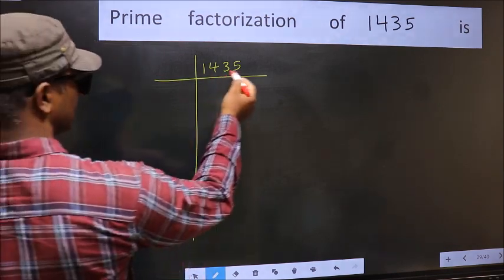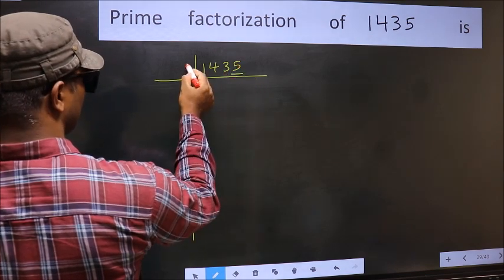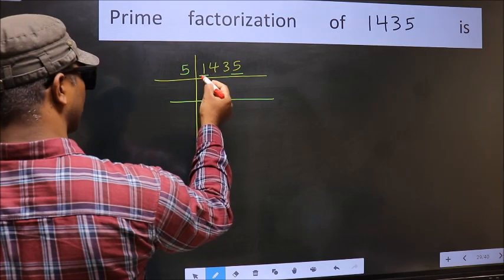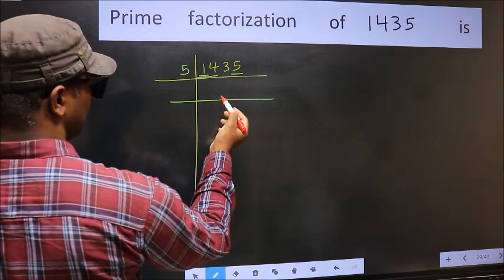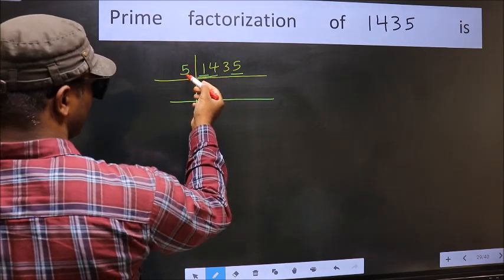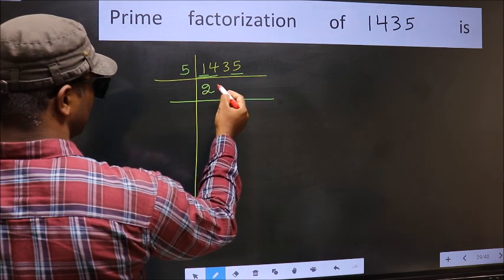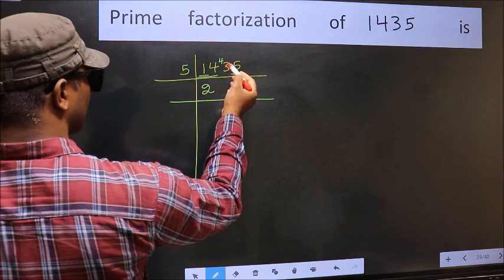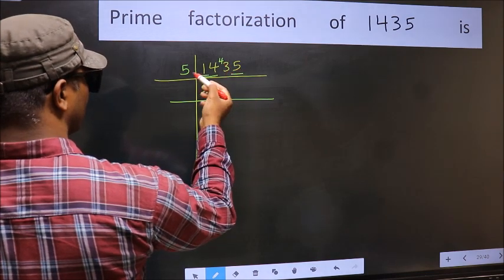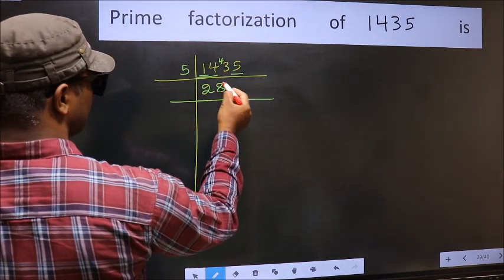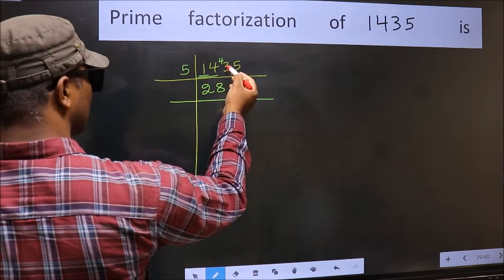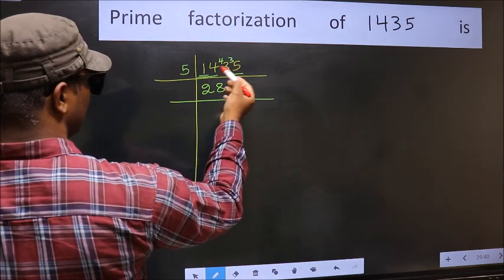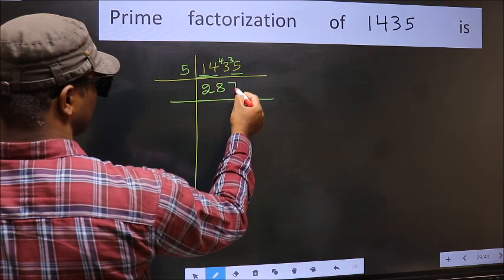In this number, the last digit is 5, so take 5 first. Number 1 is smaller than 5, so take two numbers: 14. A number close to 14 in the 5 table is 5×2=10. 14 minus 10 is 4, carried forward. 43 - a number close to 43 in the 5 table is 5×8=40. 43 minus 40 is 3, carried forward: 35. When do we get 35 in the 5 table? 5×7=35.